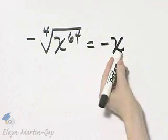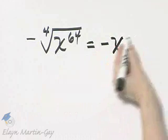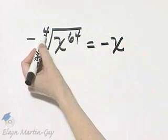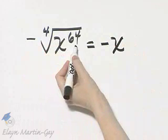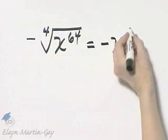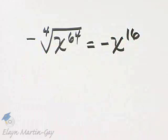In other words, this simplifies to x raised to a power of, how many times does 4 divide into 64? It divides into 64 16 times.